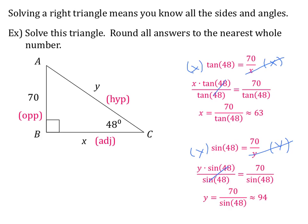So solving the right triangle means we know all the sides: 63, 94, and 70. We also need all the angles. We already have a 48 degree angle and a 90 degree angle. To find angle A, subtract from 90: the measure of angle A equals 90 minus 48, which is 52 degrees. Now the right triangle is fully solved — all sides and all angles are known.